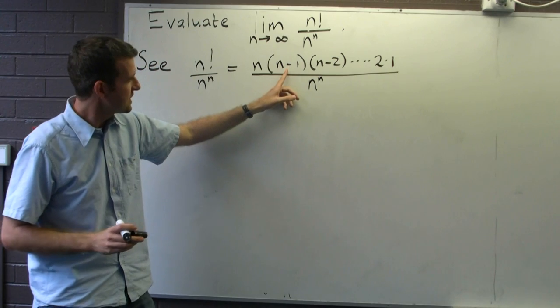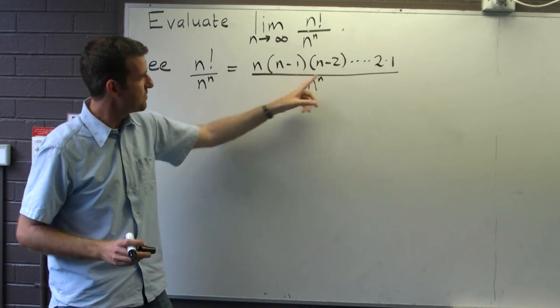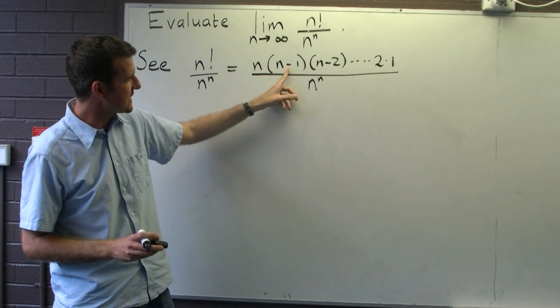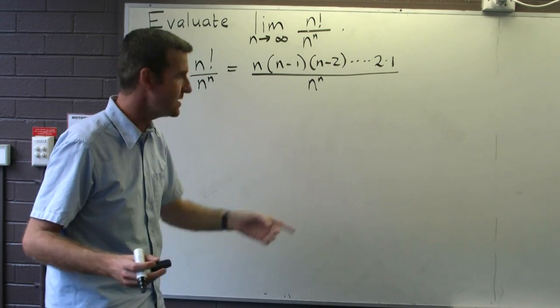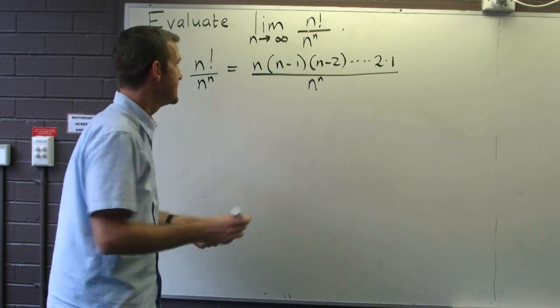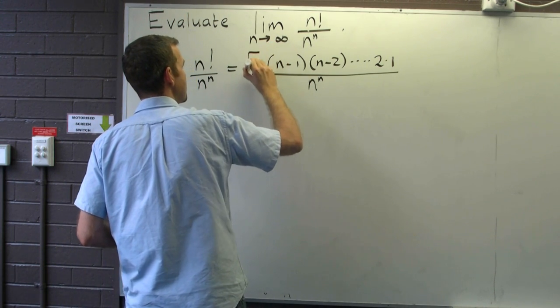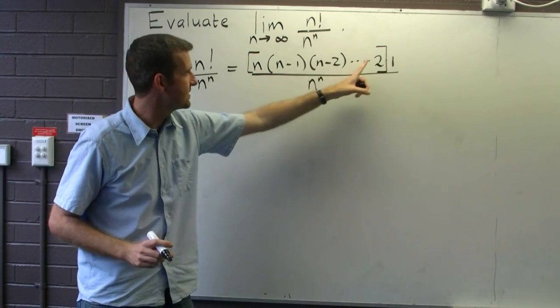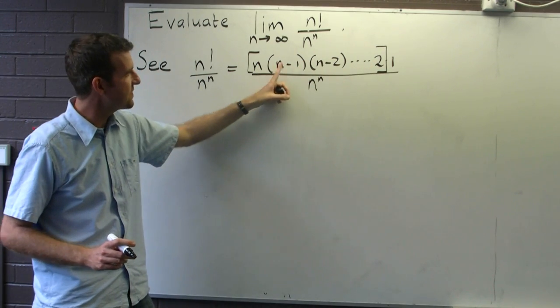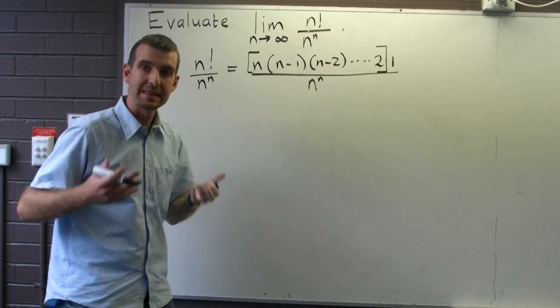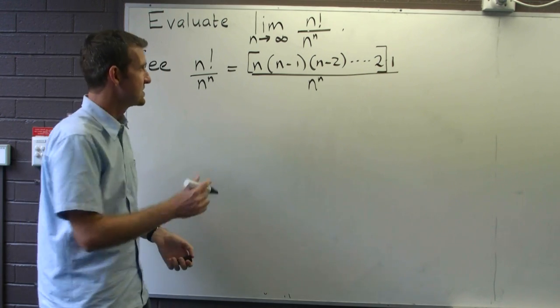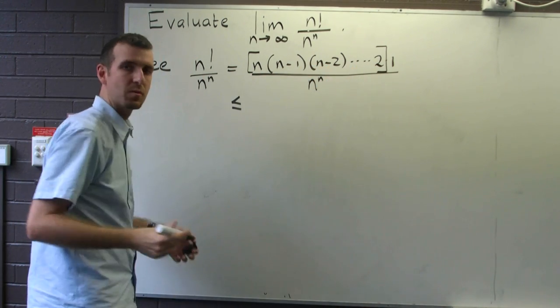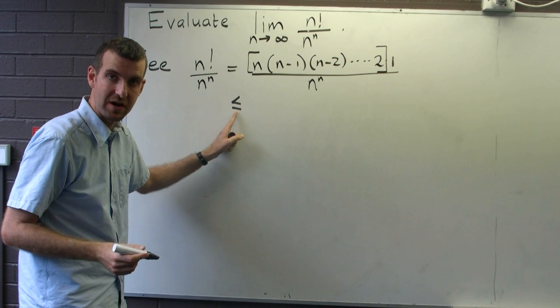Now, if we look carefully, can we relate the top part with the bottom part in some way? Well, n minus 1 is always less than or equal to n. n minus 2 is always less than or equal to n. So if we just concentrate on these factors here, n minus 1 factors, each of those factors is less than or equal to n for every n. So what I'm going to do is replace each of these factors with n and have a less than or equal to sign joining them.